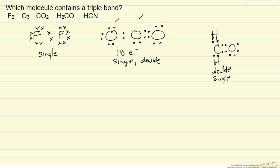Looks like I skipped carbon dioxide, so carbon dioxide. Carbon has 4, so now we have double bonds. We have 2 double bonds and we have the correct number of electrons, but no triple bonds.